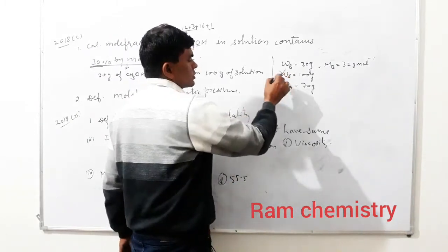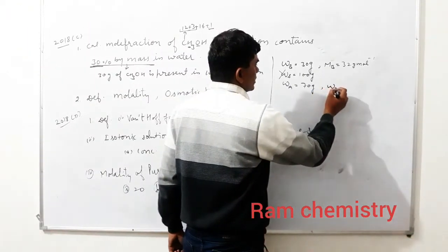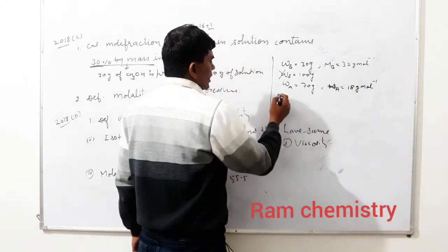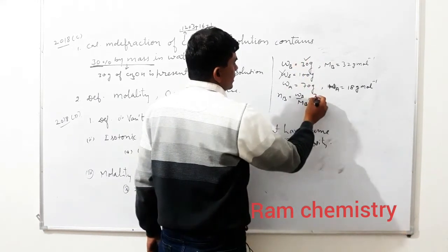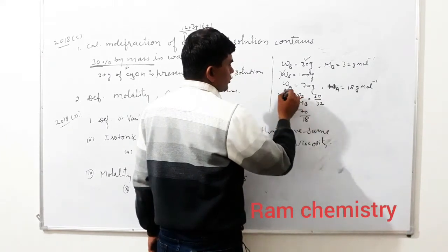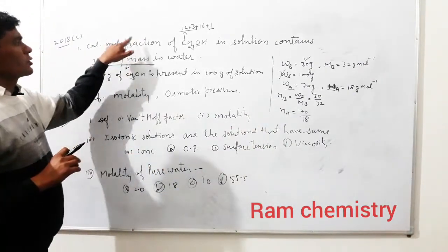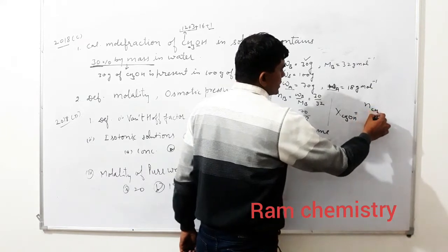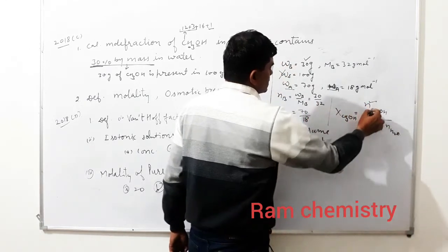Weight of solute (CH3OH) = 30 gram; weight of solution = 100 gram; therefore weight of solvent (water) = 70 gram. Molecular mass of water (MA) = 18 gram. Number of moles of solute NB = WB/MB = 30/32. Number of moles of solvent NA = WA/MA = 70/18. Mole fraction of CH3OH = NB upon (NB + NA) — put in these values to calculate.